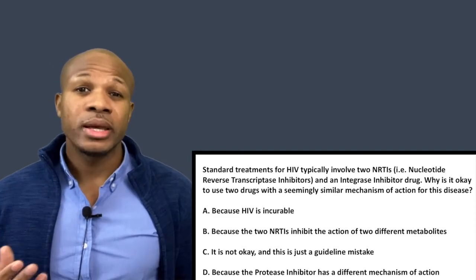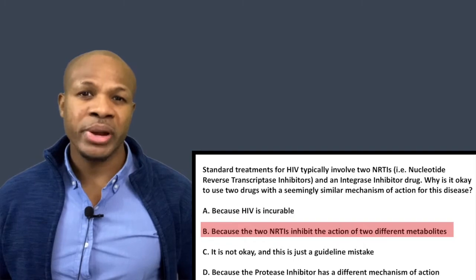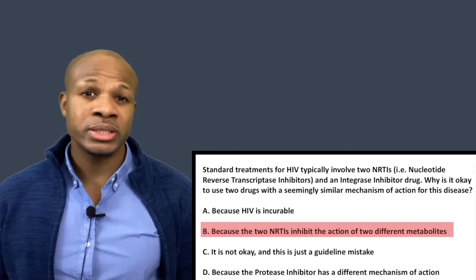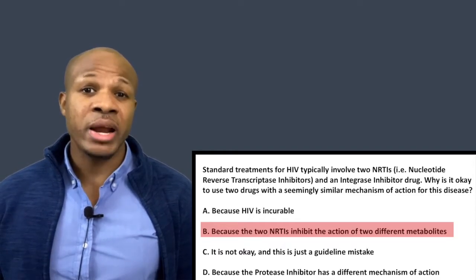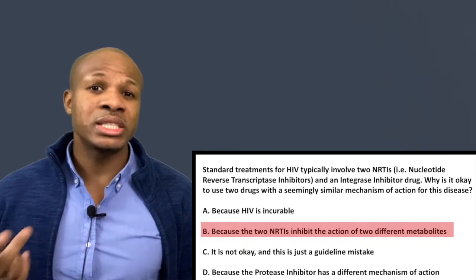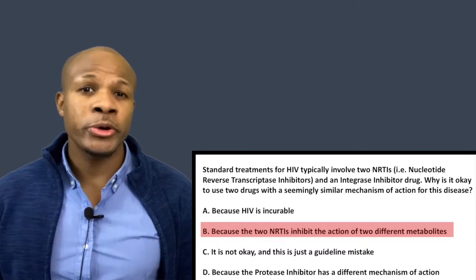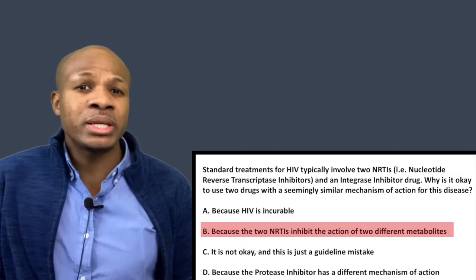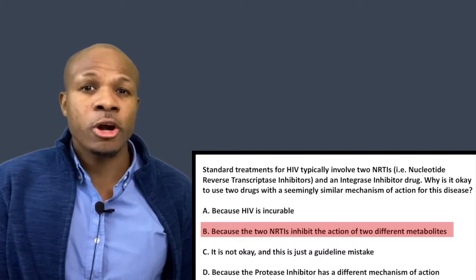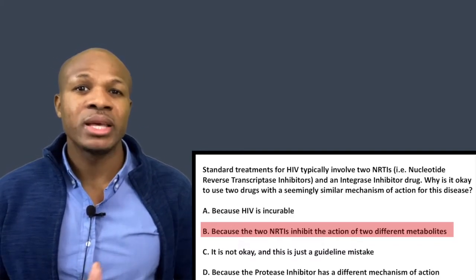Answer choice B is correct: the two NRTIs inhibit the action of two different metabolites. In HIV, the two NRTIs are drugs that inhibit certain nucleotides or nucleosides responsible for the formation of DNA — specifically the virus's DNA. DNA is made up of four nucleotides: A, T, G, and C. With anti-metabolite drugs you can inhibit any one of those metabolites. As long as the two drugs are inhibiting the implementation of two different metabolites, you can give those two drugs together. It seems like a contradiction but it's really not.